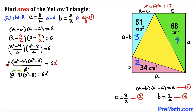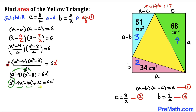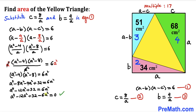Now let's expand using double distribution: a² × a² = a⁴, a² × (−8) = −8a², (−4) × a² = −4a², and (−4)(−8) = 32. Combining the like terms −8a² and −4a² gives −12a². Moving 6a² to the left side and combining with −12a² gives −18a². So we end up with: a⁴ − 18a² + 32 = 0.